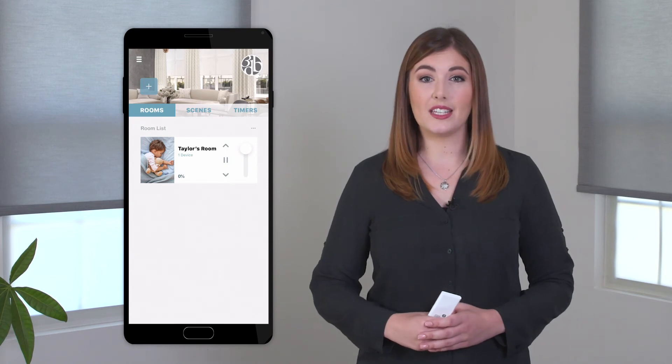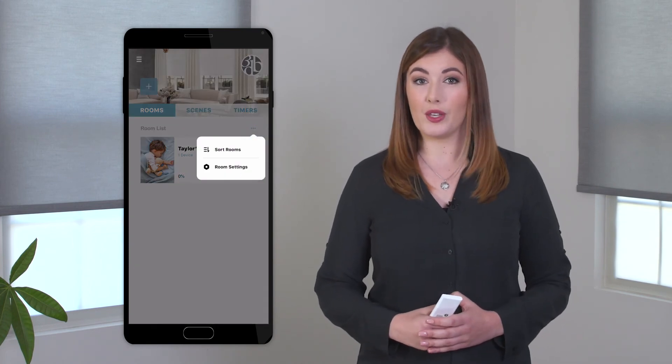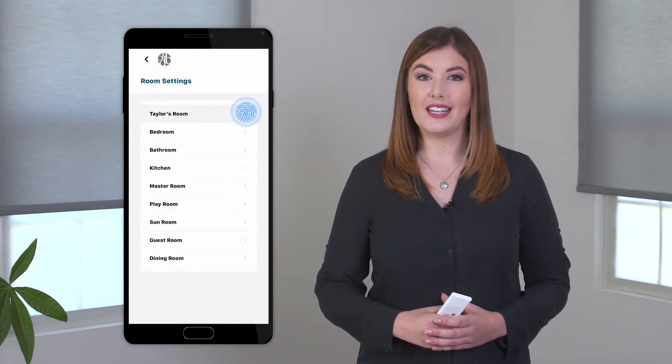If you ever want to edit the details of a room, go to the rooms tab and click the three dots in the upper right corner. From here, you can change the name or photo used. Click done when completed to save your changes.